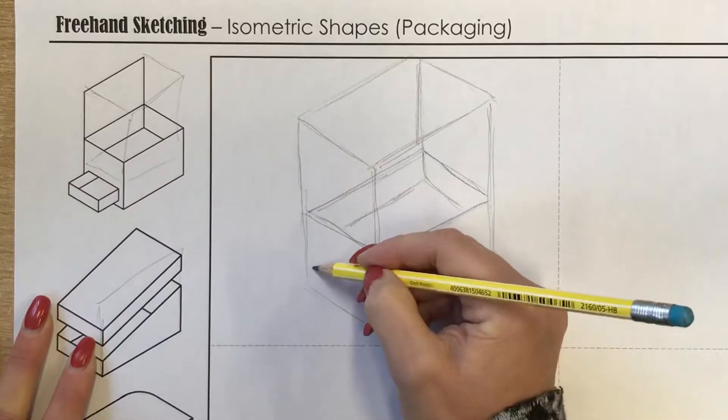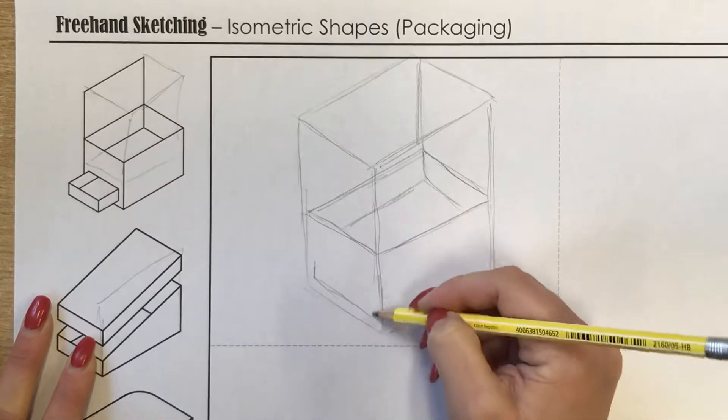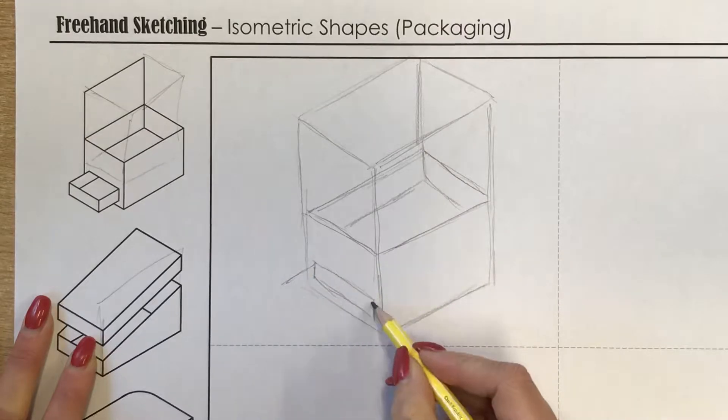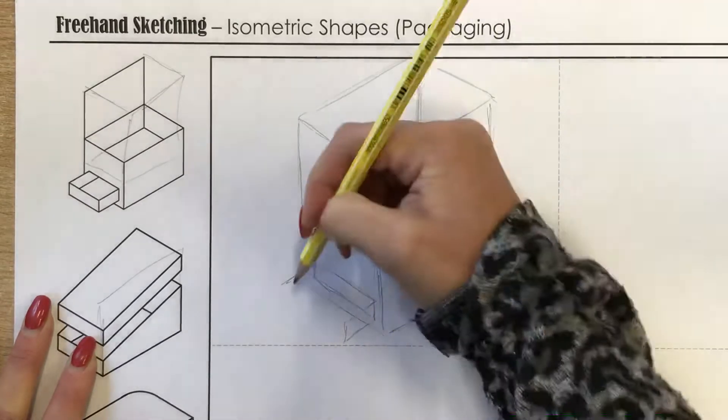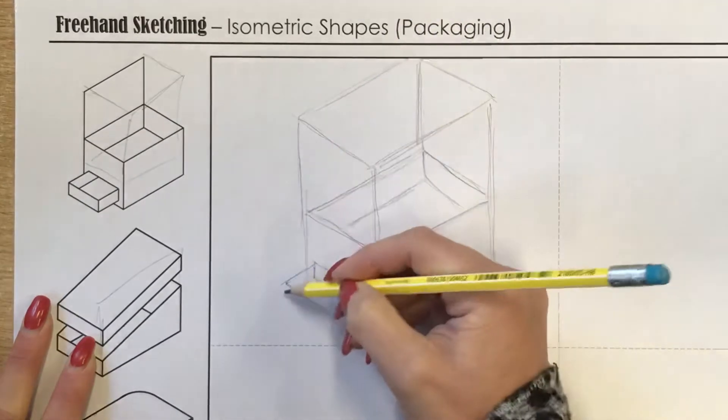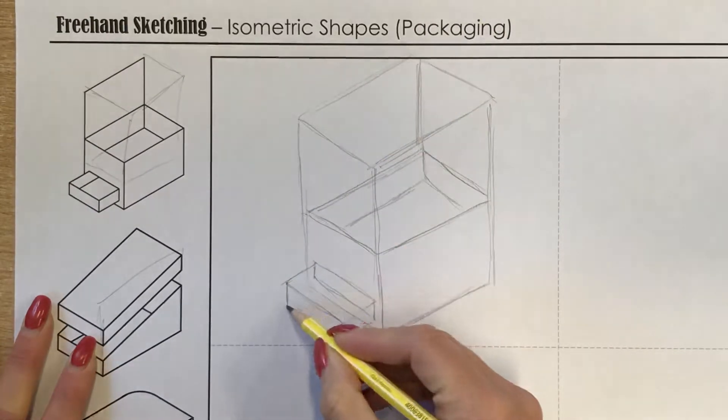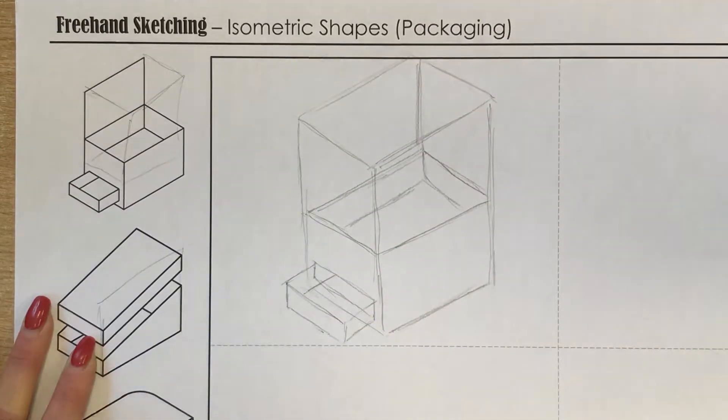We've then got the drawer on the side, and again it's just about keeping everything parallel. You only really want to be drawing three sets of lines. If your lines don't sit parallel to each other, then the isometric isn't going to work.